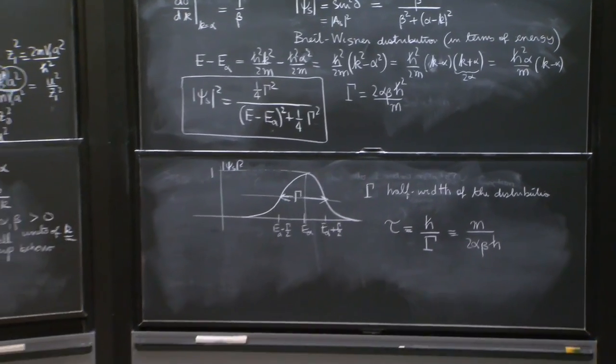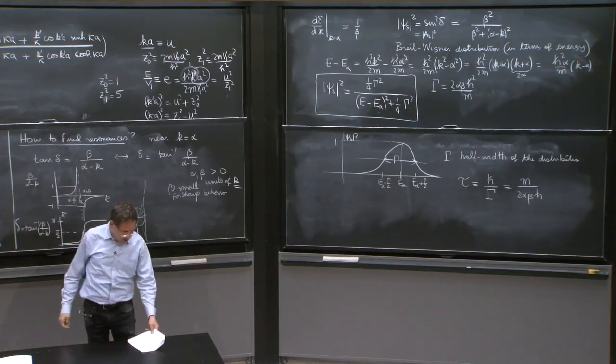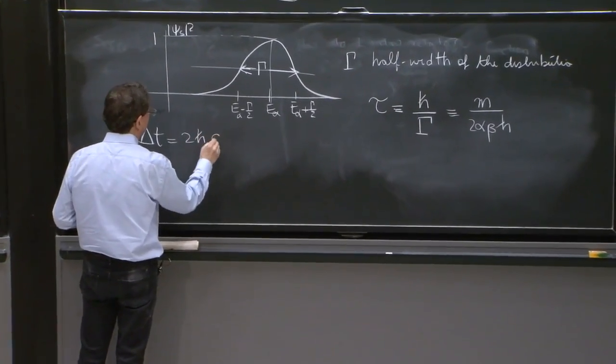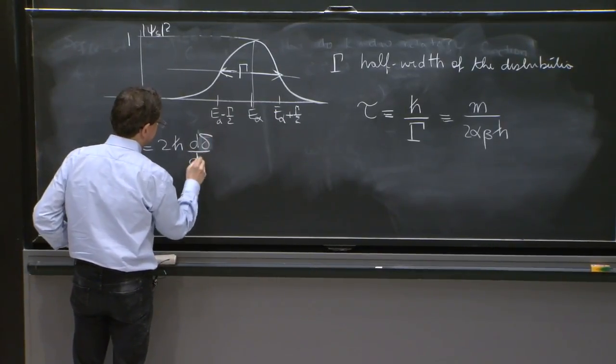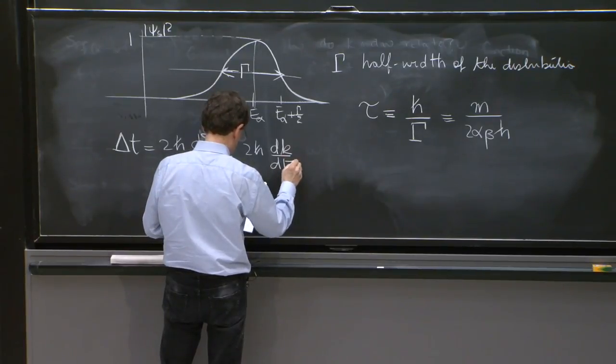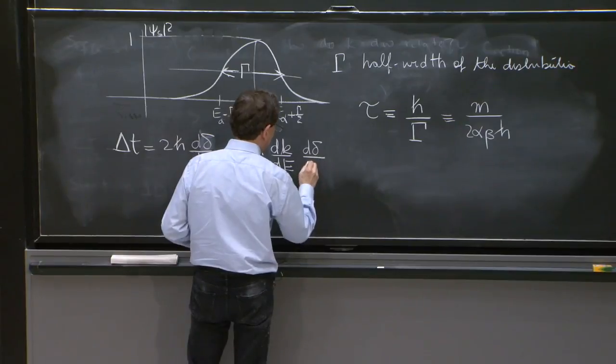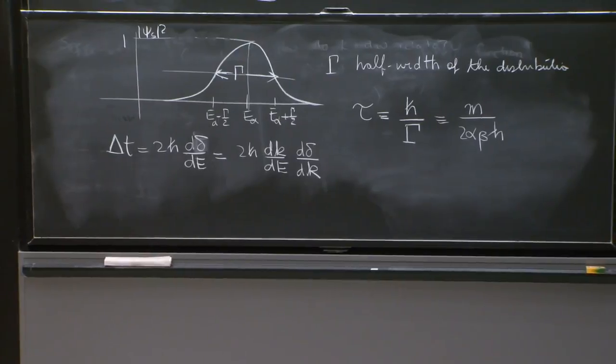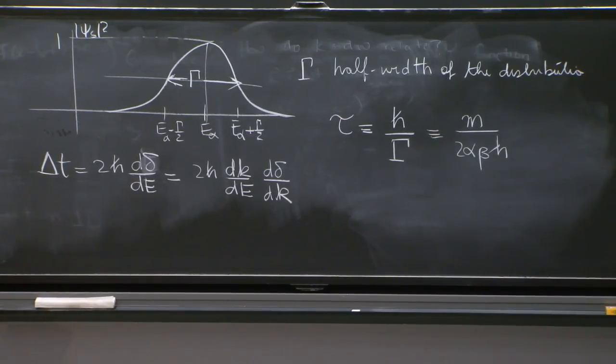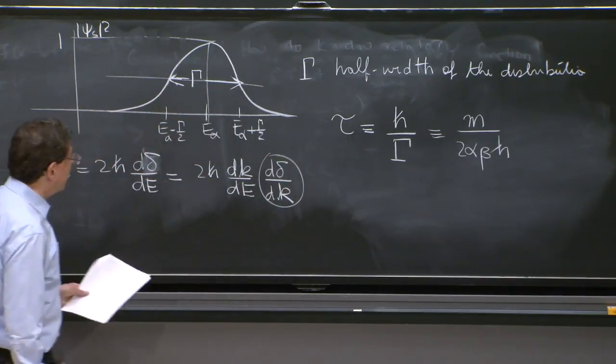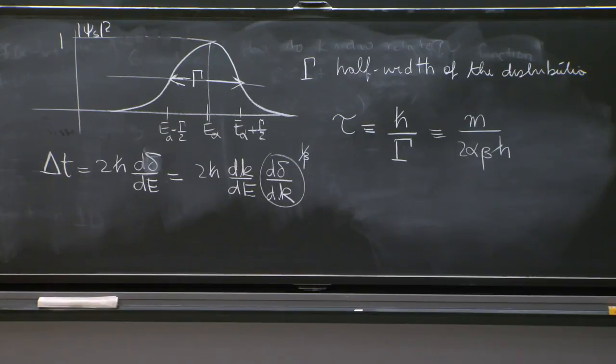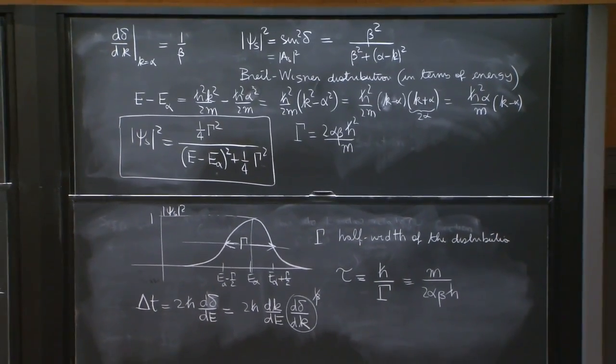So the natural thing, of course, is to compare to the time delay associated to this process that we've been studying. And so the time delay, delta t, was 2 h-bar d delta d e. And this is 2 h-bar d k d e times d delta d k. Now d delta d k, we calculated it up on the blackboard. So this was equal to, this has been calculated as 1 over beta, at resonance. At the resonance, this time delay was calculated above and it's equal to 1 over beta.